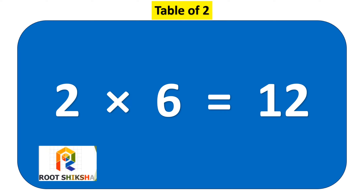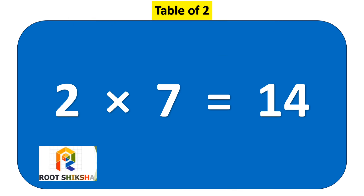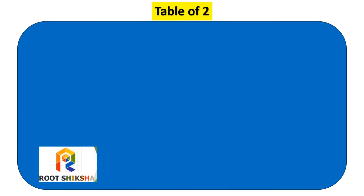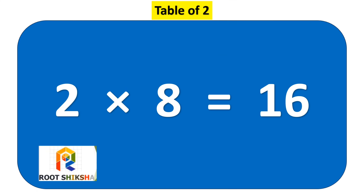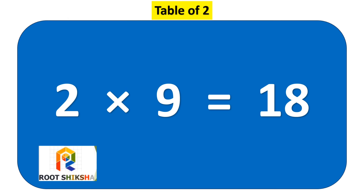Two sixes are twelve. Two sevens are fourteen. Two eights are sixteen. Two nines are eighteen.